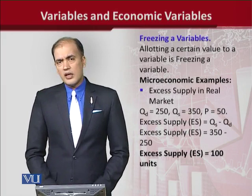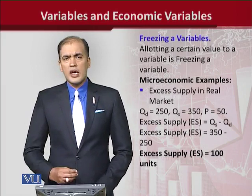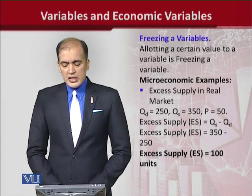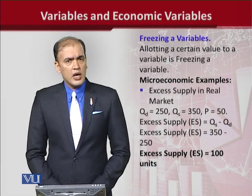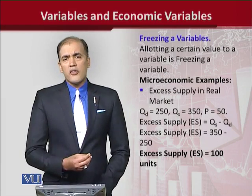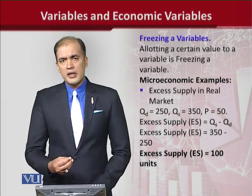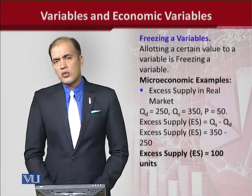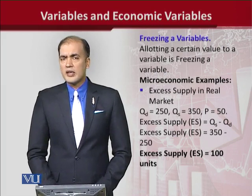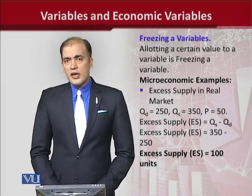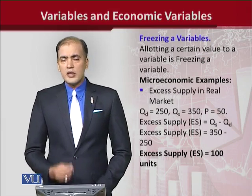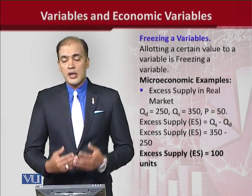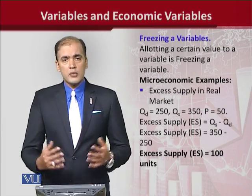When we allot a certain value to a variable, we say that we have done the process of freezing the variable. For example, if we take the case of excess supply in the real market, there is a difference between quantity demanded and quantity supplied. If we have the numerical values of QD and QS, we can get the numerical value of excess supply. By freezing the variables we can get a precise value which is easily interpretable.